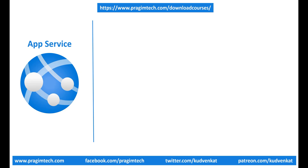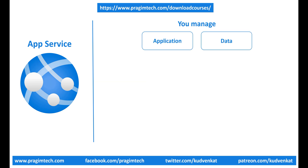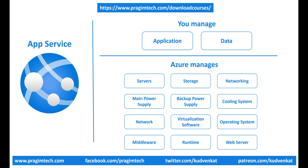Azure App Service, on the other hand, is a platform as a service offering. This means you or your organization is only responsible for managing your business application and its data. Everything else is managed by Azure. You don't have to worry about managing the network or underlying infrastructure, installing operating system updates, critical patches, runtime or middleware components — all these are taken care of by Azure. This gives you even more time to concentrate on what matters to your business.